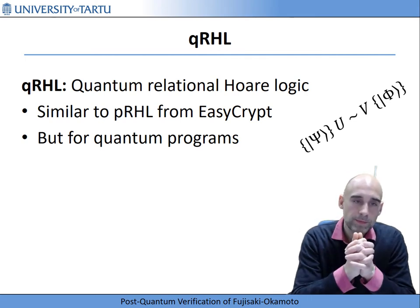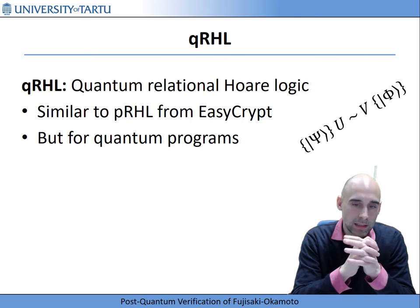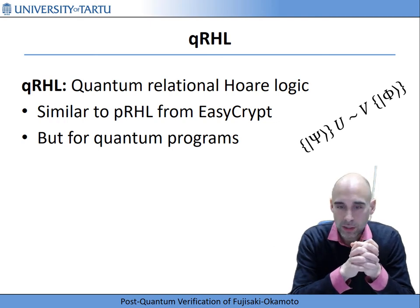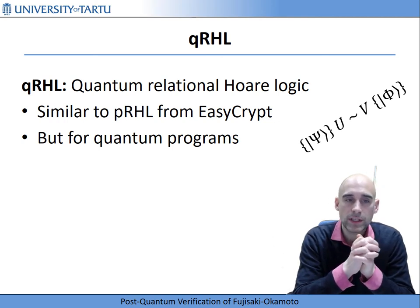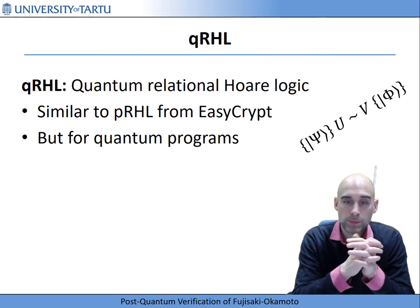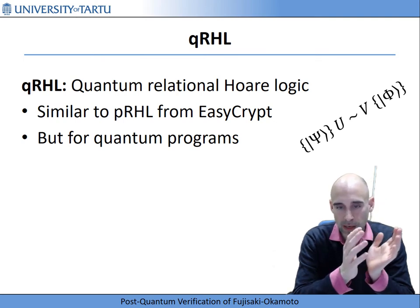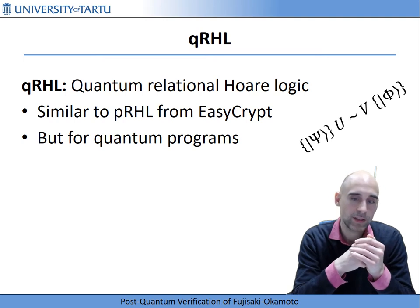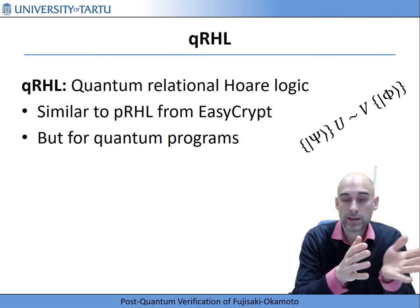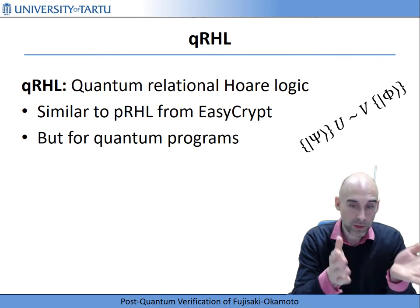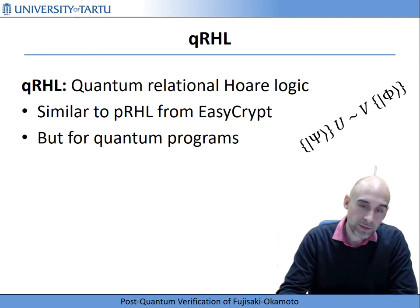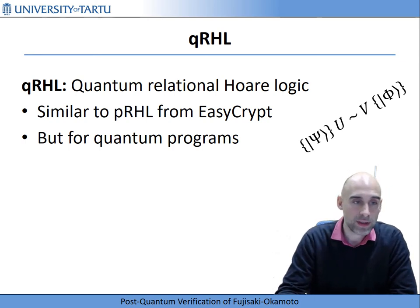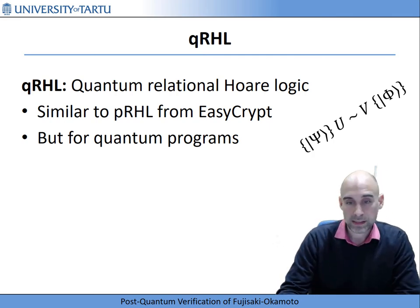So what can we use in the quantum setting? For this we use our prior work on Quantum Relational Hoare Logic (QRHL). QRHL is a logic similar in spirit to the Probabilistic Relational Hoare Logic from EasyCrypt, but with support for quantum programs. While pRHL in EasyCrypt can only reason about classical programs and classical adversaries, even for post-quantum security where protocols are classical, we still need to reason about quantum adversaries — so pRHL does not even work there. Therefore we need another logic, and QRHL accounts for that.